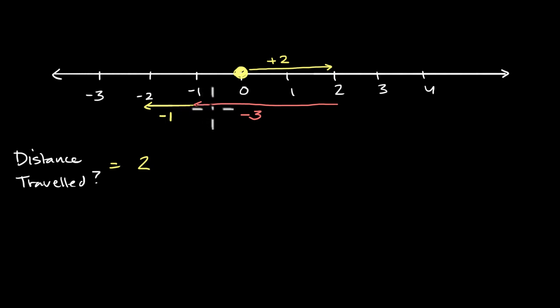So we won't specify a direction. Whether something is positive or negative on this number line is implicitly giving a direction. But if we're talking about distances, we wouldn't pay attention to the direction. We only care about the magnitude. So this would be two plus three plus one.